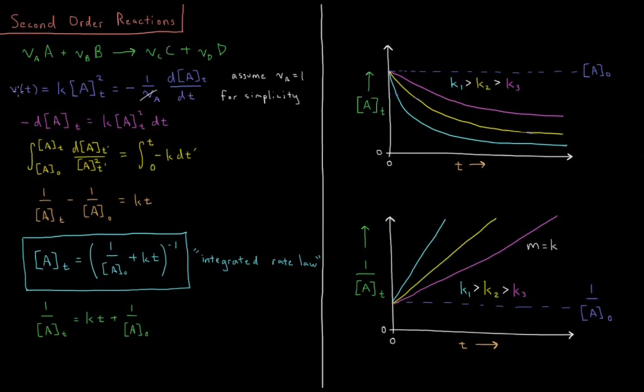We have our reaction rate, which we're going to assume here obeys the following rate law. It equals the rate constant K times the concentration of A squared. So the reaction rate is also defined as being equal to minus 1 over the stoichiometric coefficient of A times the derivative of A with respect to T.